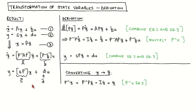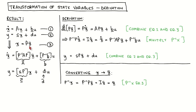Suppose we have a state variable system described by states X and system matrices A, B, C and D, and we change the definition of the states to X̄ using the transformation matrix P. The transformed state variable system is then described by this A matrix, this B vector, this C vector, and the scalar D is unchanged. To derive this result we label the state variable equations as 1 and 2 and the transformation equation as 3. The core idea of this derivation is that we combine these equations to write things in terms of X̄ and then manipulate the equations to get the standard state variable formulation.